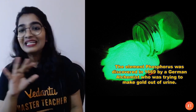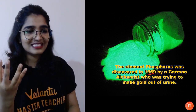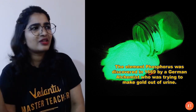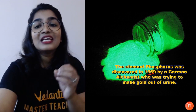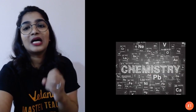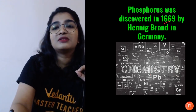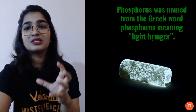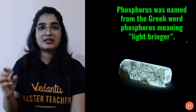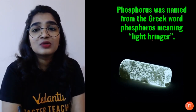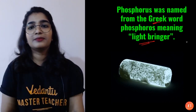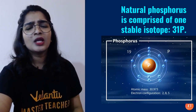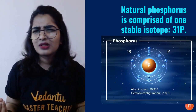He was trying to make gold out of urine — he didn't intend to discover phosphorus at all! Most discoveries and inventions have been made by accident. So keep experimenting — you never know what you might discover. That alchemist isolated phosphorus from urine.